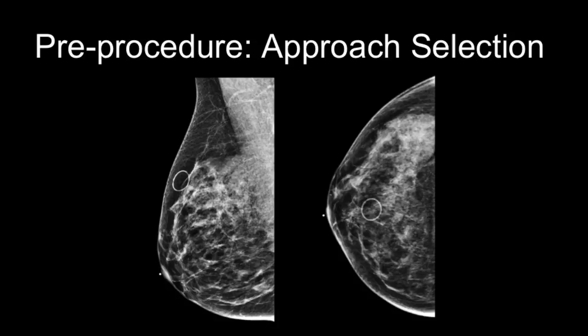Let us practice this concept with another example. Here we have a 90-degree lateral and CC view of the right breast demonstrating an oval titanium marker within the slightly upper outer right breast. On the lateral view, the target is closest to the superior skin surface; on the CC view, closest to the lateral skin surface. The lateral distance is clearly the shorter of the two, so we would use a lateral approach in this case.